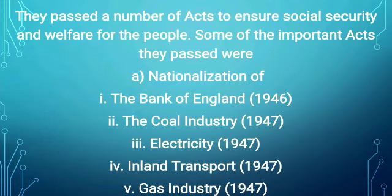In their electoral manifesto, they promised to provide a program of social services and nationalization. They passed numerous acts to ensure social security and welfare for the people. Some important acts included the nationalization of the Bank of England, the coal industry, electricity, inland transport, and the gas industry.